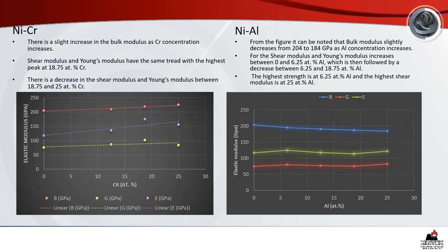Looking at the mechanical properties of nickel-chrome alloys, there is a slight increase in the bulk modulus as chromium concentration increases, as indicated by the red graph in the elastic modulus diagram. The shear modulus and Young's modulus show the same behavior with the highest peak at 18.75 atomic percent chromium, followed by a decrease between 18.75 and 25 atomic percent chromium.